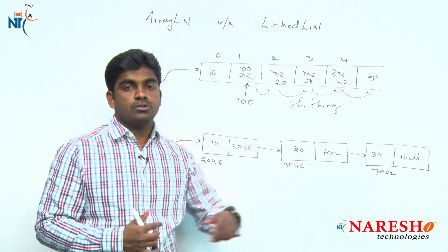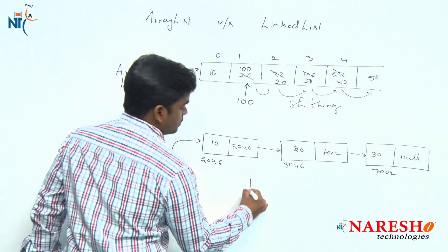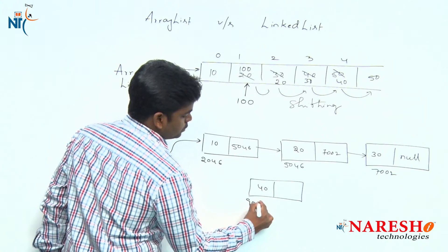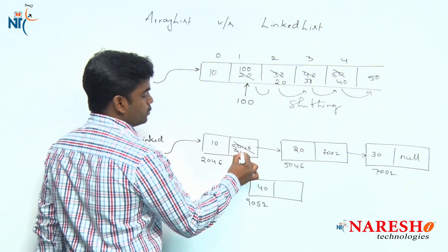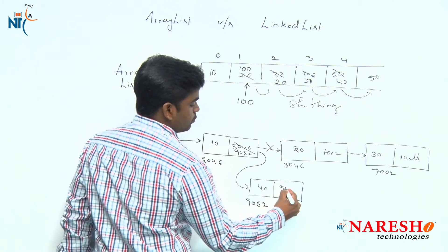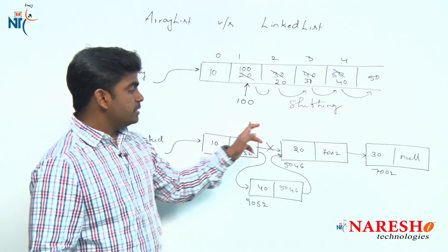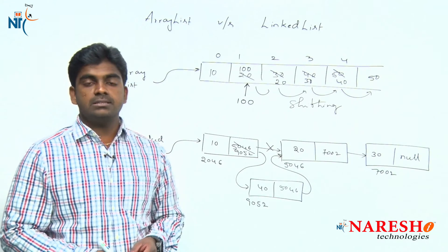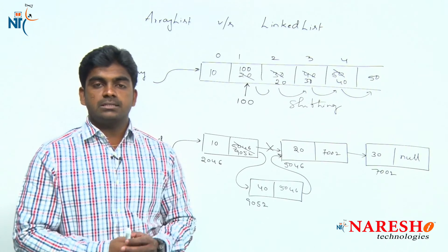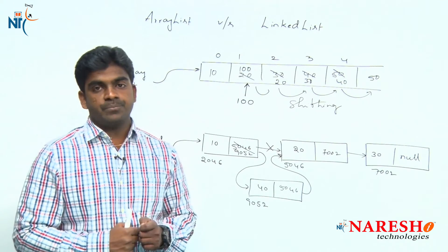In LinkedList, elements are at random memory locations so there is no shifting required. To insert a new element — say 40 at address 9052 — you just update the pointers: the previous node stops pointing to 5046 and starts pointing to 9052, which then points to 5046. The new node is connected in between the two nodes. Insertions and deletions are faster in LinkedList compared to ArrayList because there is no shifting of elements.